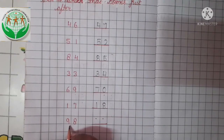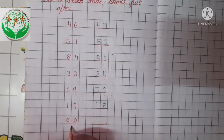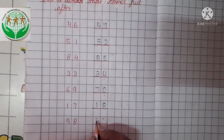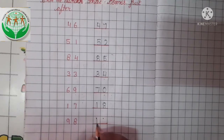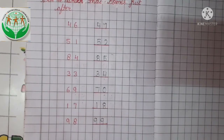And the last but not the least. This is number 98. Now tell me, what comes just after 98? 98 ke after kya aega? Tell me. Yes, number 99. So we write here number 99.